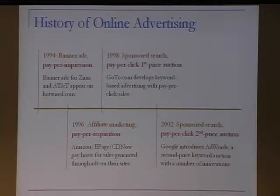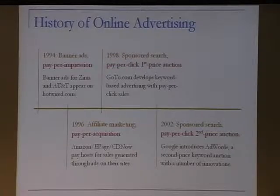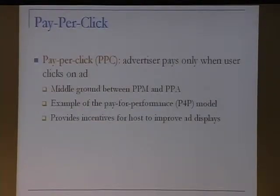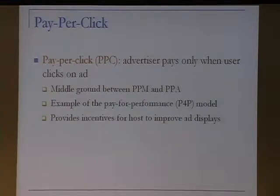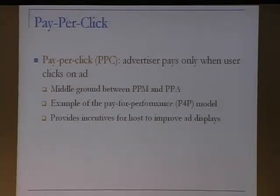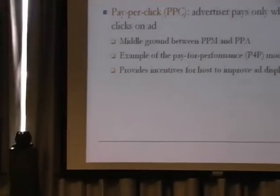Affiliate marketing works by posting ads for a particular product on a host web page; when somebody buys the product, Amazon or CDNow pays some percentage back to the host. Then finally in 1998, goto.com developed the first pay-per-click advertising systems — text-based ads on search web pages, adopted by Google in 2002 with some differences in the selling mechanism. In these systems the advertisers pay only when the user clicks on their ad.